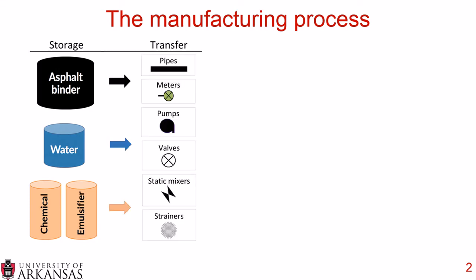All of these raw materials need to be transferred through pipes using pumps. Meters monitor various important properties of the raw materials, valves direct the material down the proper pipes, and static mixers and strainers allow for a high-quality, well-mixed material.